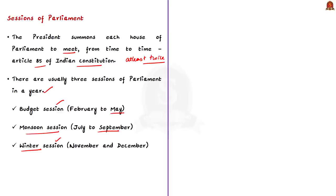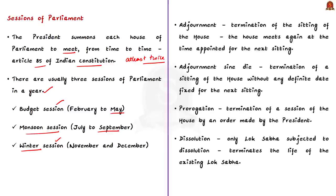This year the monsoon session is delayed because of the COVID-19 pandemic. When we say the session of the parliament, it refers to a period spanning between the first sitting of the parliament in a session and its prorogation. Here, prorogation means discontinuation. And when we say recess, it refers to a period spanning between the prorogation of the house and its reassembly in a new session.